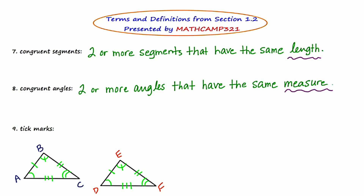The other very important thing is the symbol for congruent. The symbol for congruent is an equal sign with a little tilde or squiggle above it — an equal sign with a wavy line on top. Maybe you've seen it before. Tick marks are special markings used in geometric figures to indicate congruence.